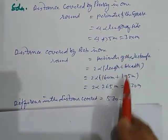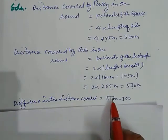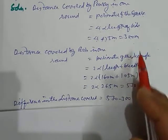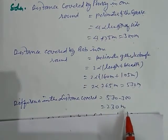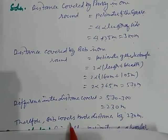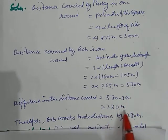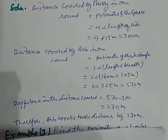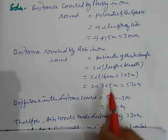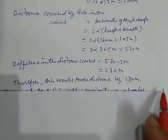So here we get both the distance. So difference in the distance covered is 530 minus 300, 230 meter. So therefore, Bob covers more distance by 230 meter. So this type of problem can be solved by this way also.